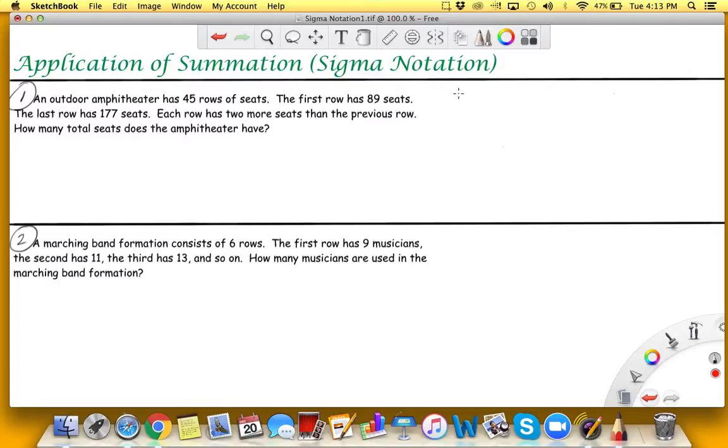So we can say a sub n equals 89 plus n minus one times two. So 89 is the initial - the first row has 89 seats in it, and then the common difference here is two.